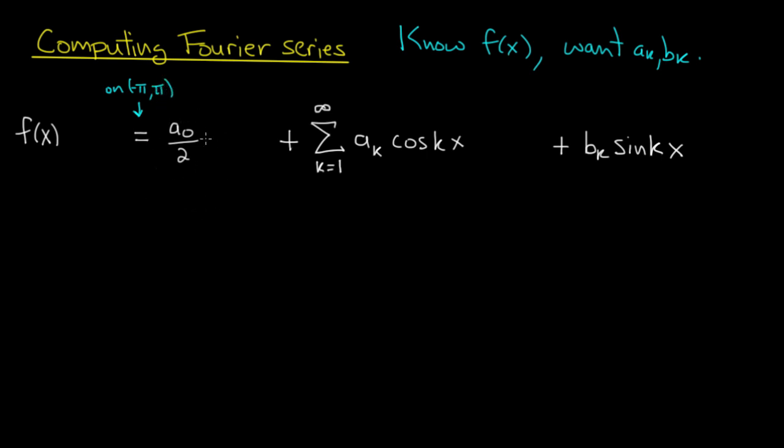One more thing to note here is that I put a_0 over 2 instead of a_0, and that's just a very minor thing—a matter of convenience. You'll see why I did it in a moment. Now here's the trick. Let's take both sides of this expression and multiply both sides by cos lx, where l is a positive integer. I had a plan. And I'm going to integrate from minus π to π all of these terms.